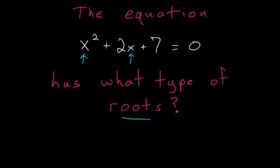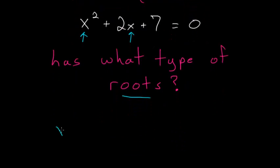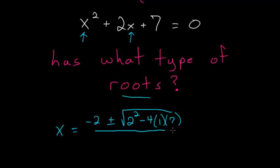So using the quadratic formula we have x is equal to minus the coefficient on the x term so minus 2 plus or minus square root of this 2 here squared minus 4 times the coefficient on x squared which is 1 multiplied by the constant 7 and then this is all divided by twice the coefficient on x squared so twice 1.